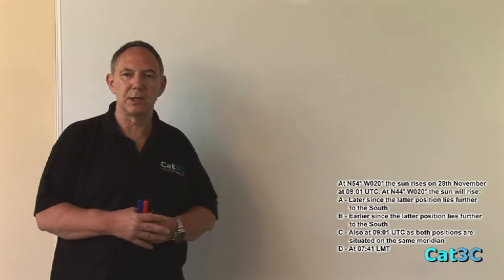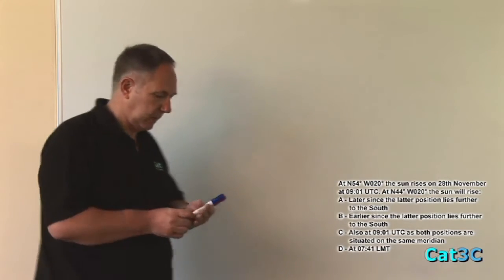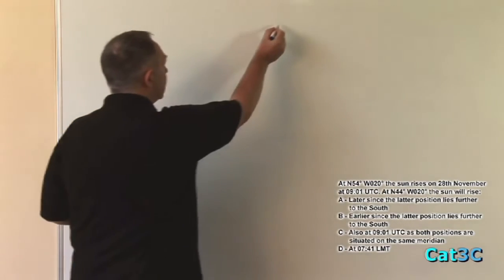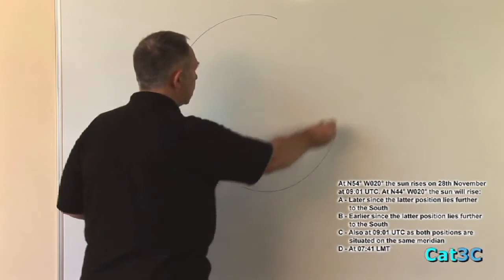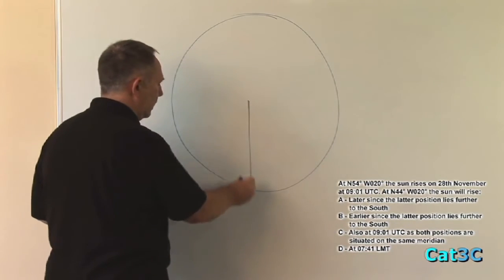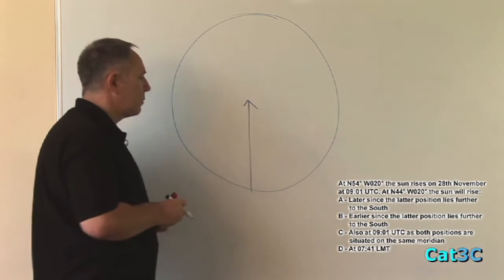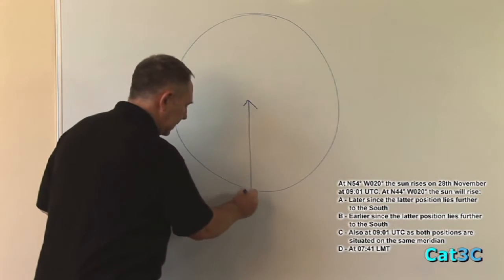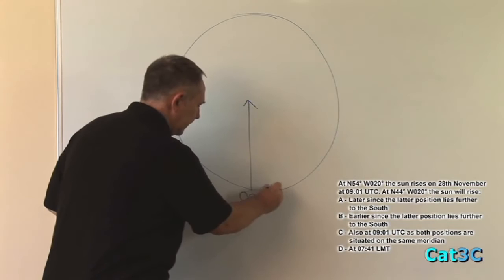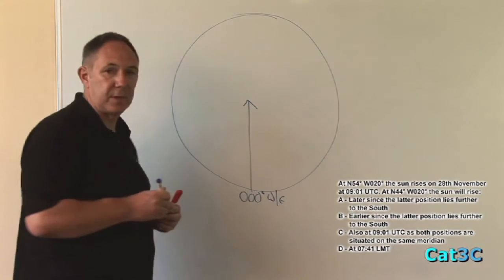All sunrise and sunset times are normally recorded in local time. So the first thing I'm going to do here is I'm going to convert 0901 UTC into local time. Using a drawing of the earth viewed from above, and this is the Greenwich meridian, which is my point of reference for UTC.